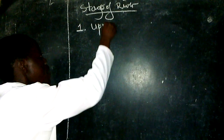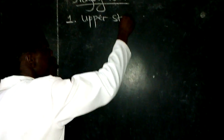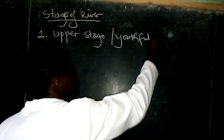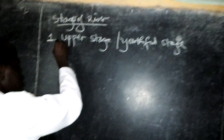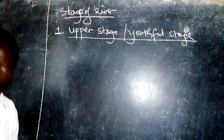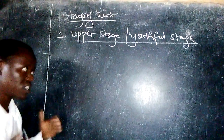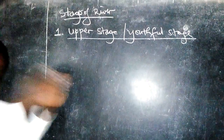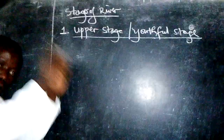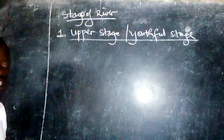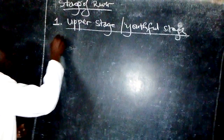Let's start with stage number one, which has been called the upper stage, or youthful stage. The youthful stage is the part of a long river profile that is near to the source — near to the starting point of that river. We are going to look at its characteristics: what are the main features and components that make up this youthful stage.